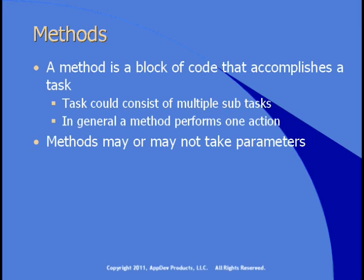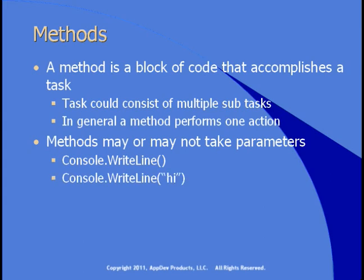Methods may or may not take parameters, so you may or may not pass additional information to them. The WriteLine method in the Console class is used to display text to the screen. If you call WriteLine without passing any parameters, it writes a carriage return and line feed. If you want to display text, you pass that text to the WriteLine method, which will display it and then write an additional line.